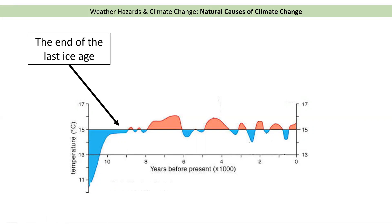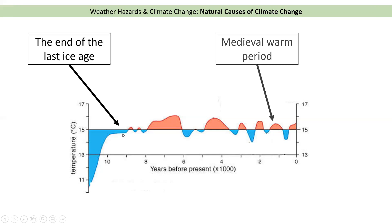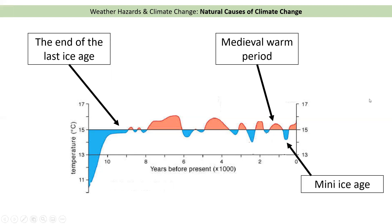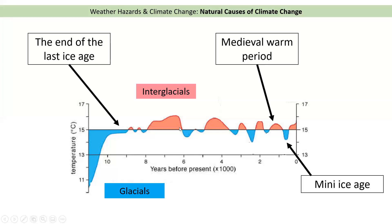If we look at about 9,000 years ago, you can see this was the end of the last large ice age. More recently, about one to one and a half thousand years ago, we had a period called the medieval warm period — it was so warm that you could grow grapes in the south of England. And then more recently we had a mini ice age, in which you could actually go ice skating on the river Thames because it froze over every winter. Just a reminder: the periods above average temperature are called interglacials, and the colder periods shown in blue are called glacials.